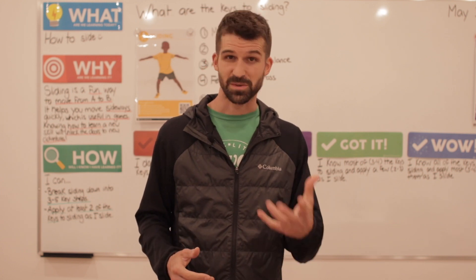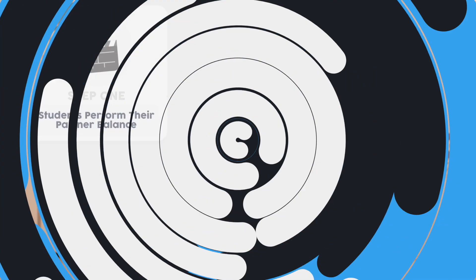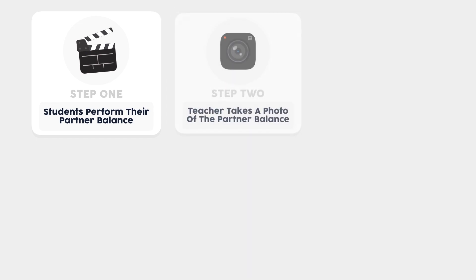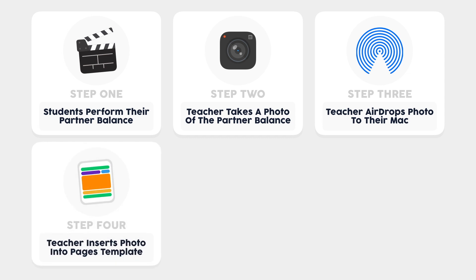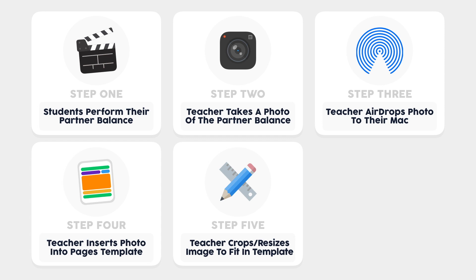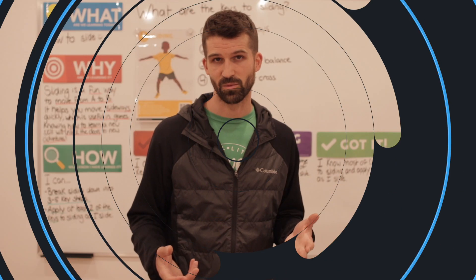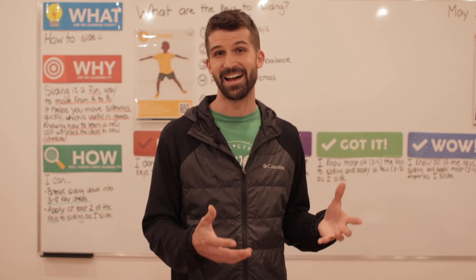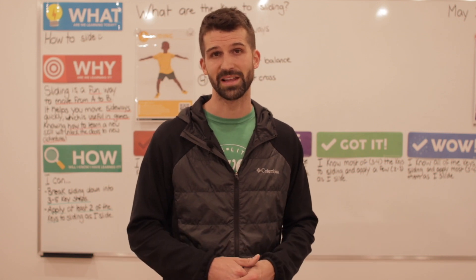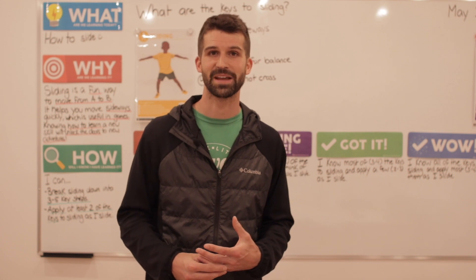To do that, the only way I knew how was: first, get my students to perform their balance, take a photo with my iOS device, AirDrop that photo to my Mac, insert the image into the document, crop and resize it to fit my template, and then print it out. To do this, I wouldn't be able to do it within one lesson — it would be too distracting and too time-consuming. I would probably have to do it towards the second half of one lesson and then pick it up in the following lesson, but I didn't want to do that because we were crunched for time.